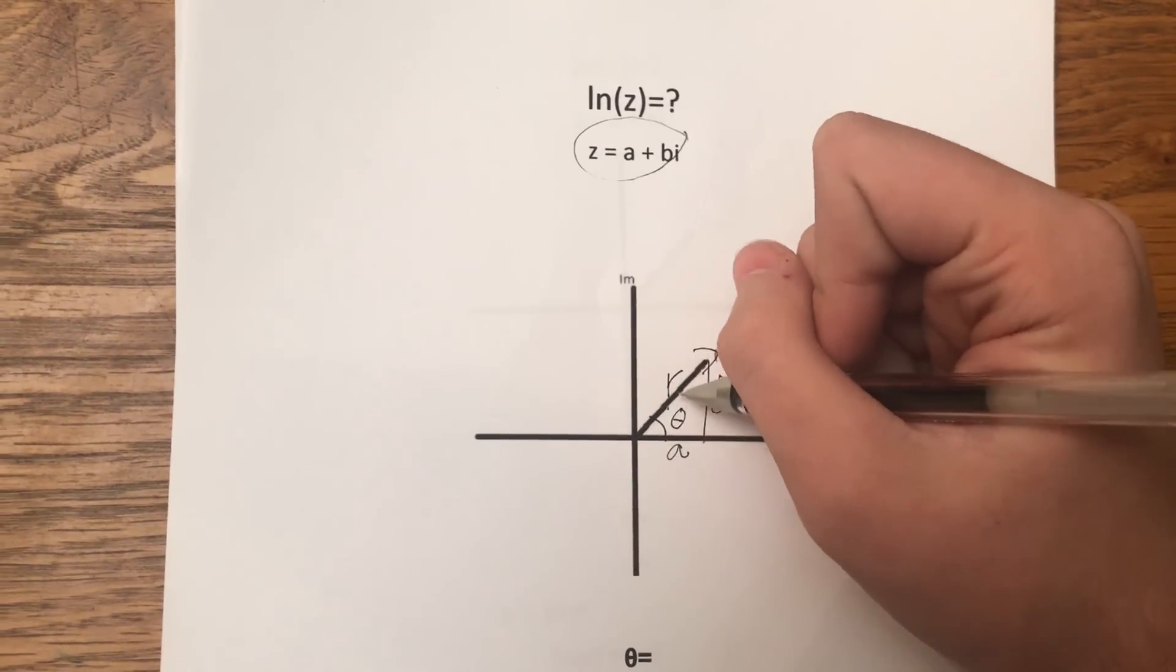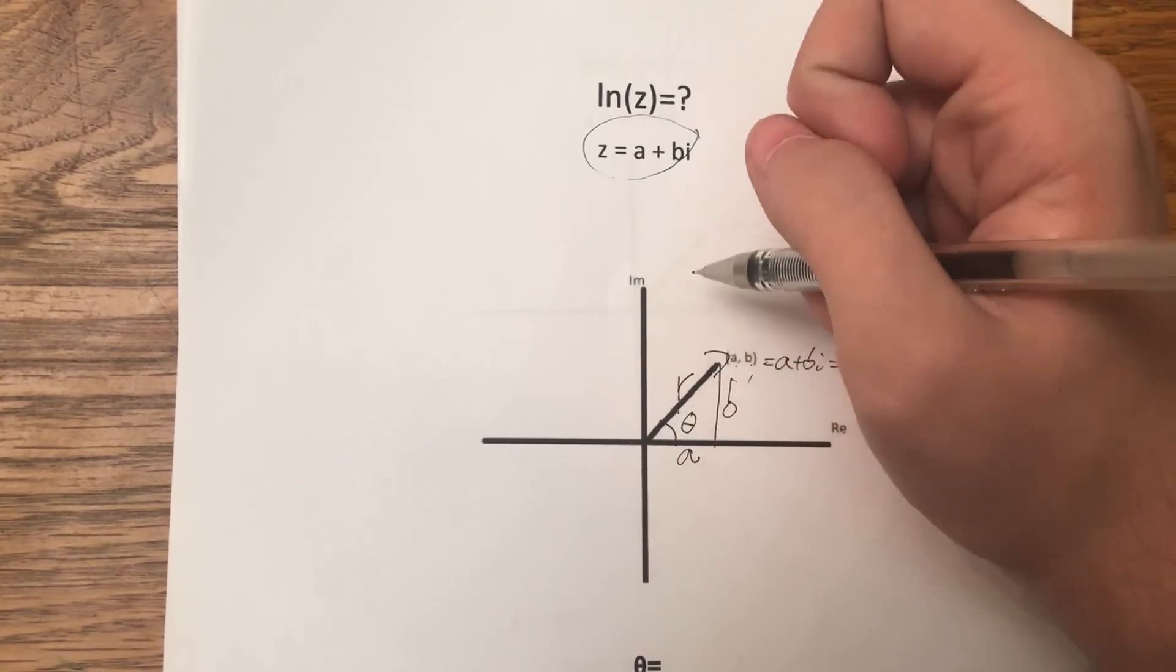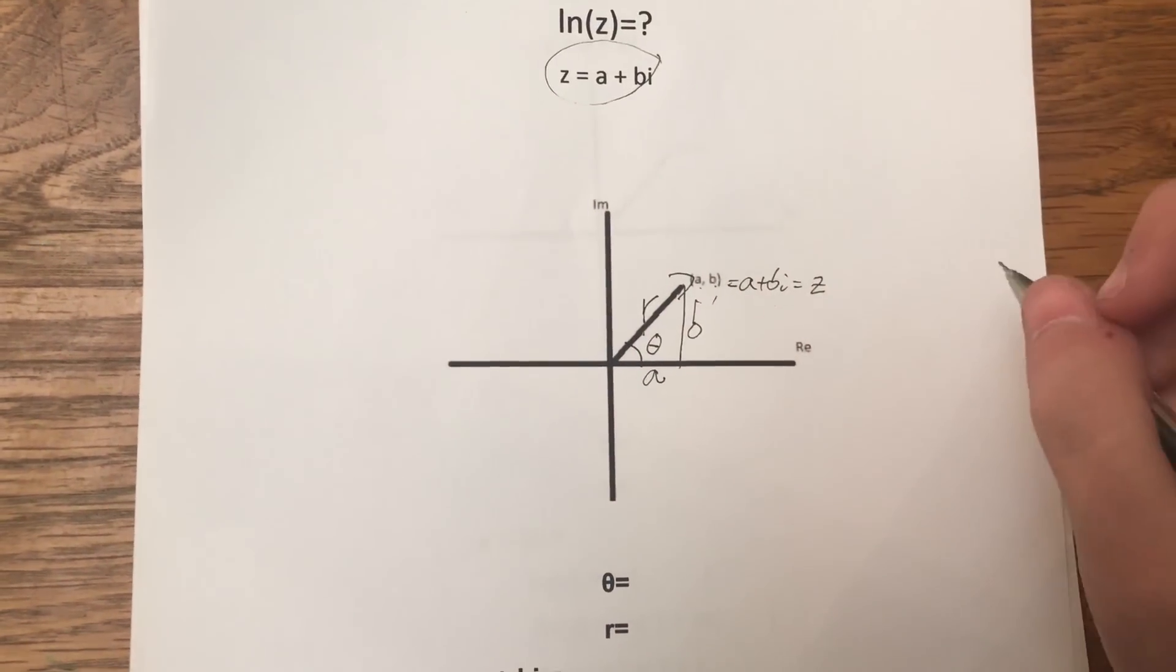Both of these are easily compatible with the trigonometry, so let's get started. We have here theta and r.